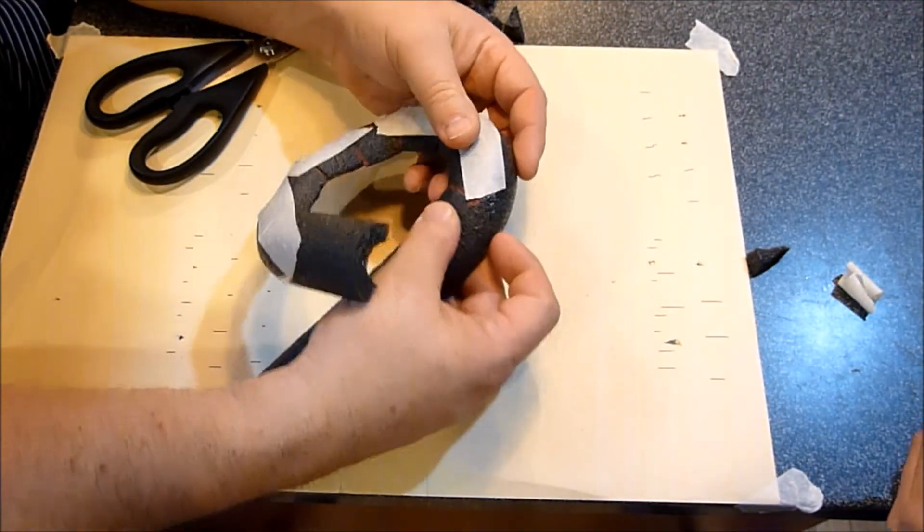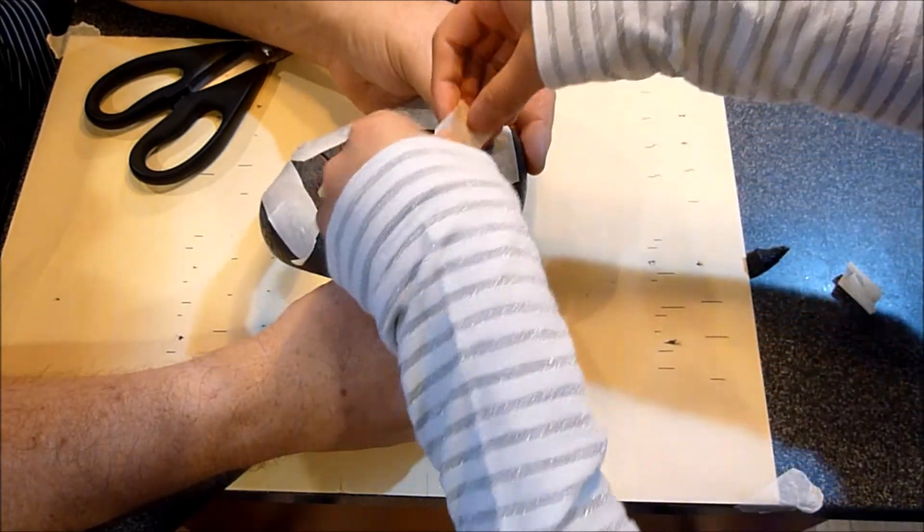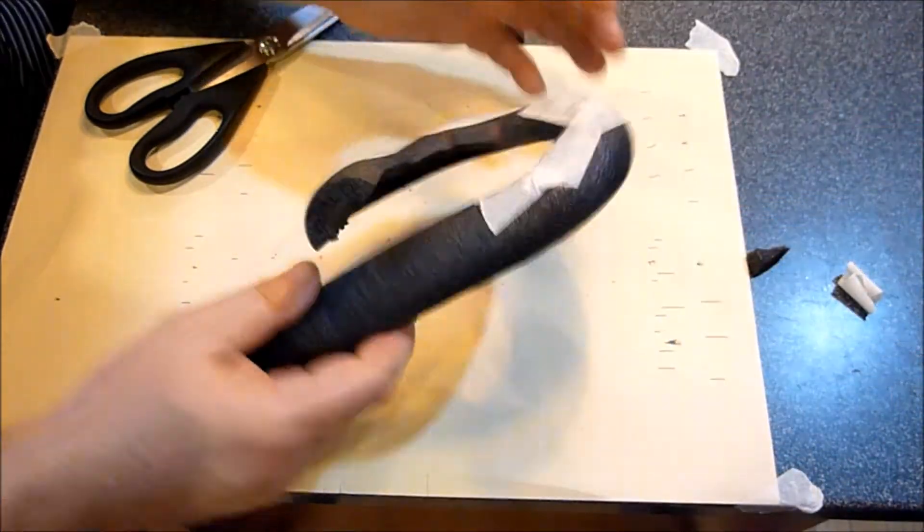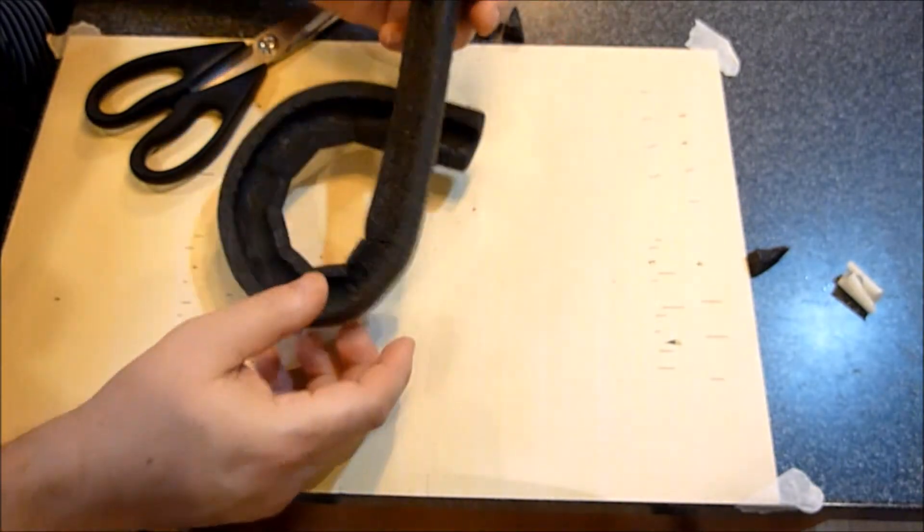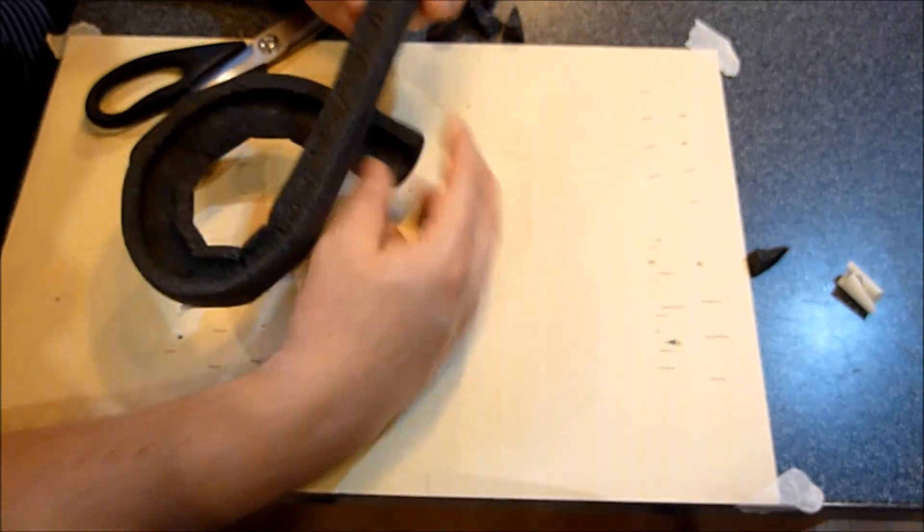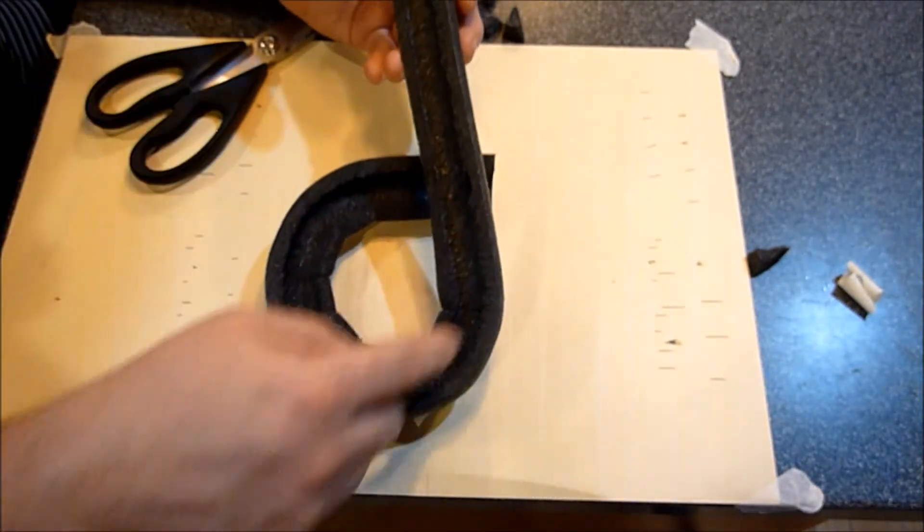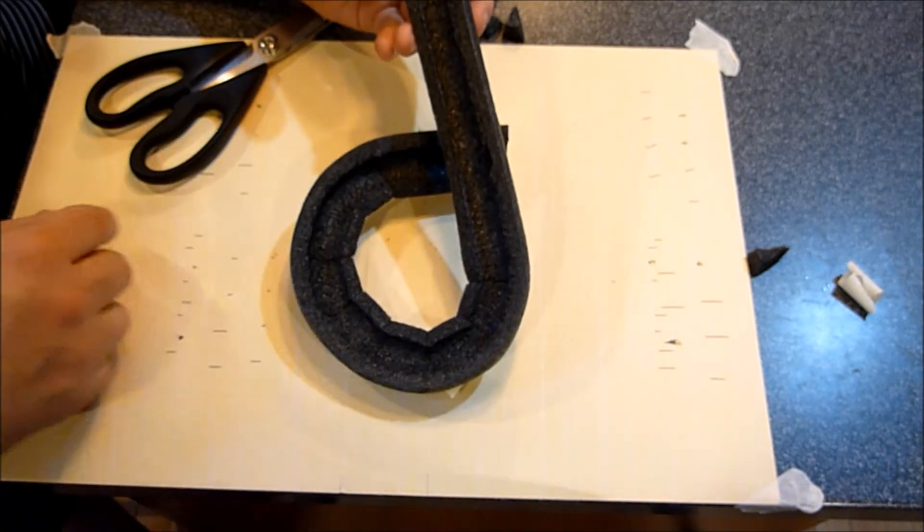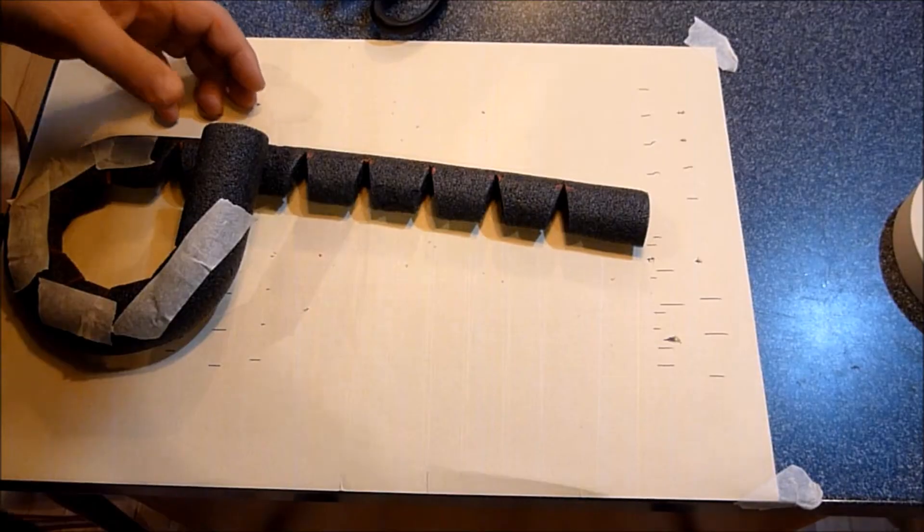And one more. And there you go. So you see you have the beginnings of what is a corkscrew. Now if you continue to cut along, it would just loop around and around.